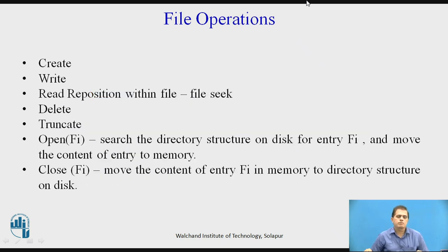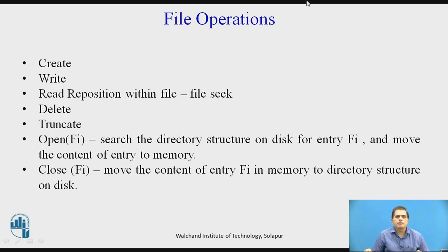What are the different file operations carried out in the operating system? First is create. Second is write. Third is read and reposition within the file. Fourth is delete. Fifth is truncate. Open file searches the directory structure on the disk for an entry file and moves the content of the entry to the memory. Close moves the content of the entry in memory to the directory structure on disk.